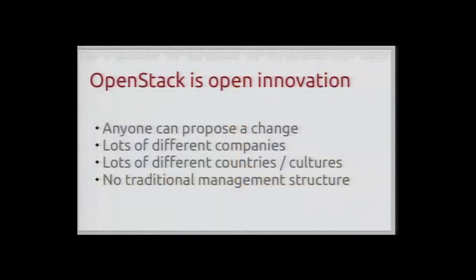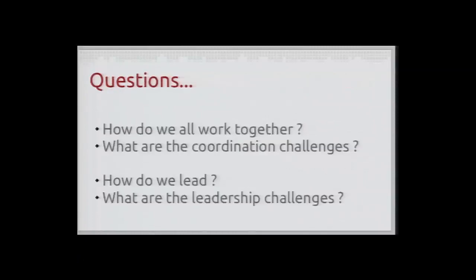Finally, OpenStack is what we call an open innovation project — anyone can propose a change, and that change will be judged on technical merits. We have lots of different companies involved, and lots of different countries and cultures, so we cannot really assume a common culture and common values. It's actually quite difficult as an ecosystem to manage. And we don't have any traditional management structure — more than half of the developers are not hired by the same company. So those are all the aspects that make OpenStack the source of a number of coordination and leadership challenges. And yet we manage to release every six months, iterate very fast, and grow.